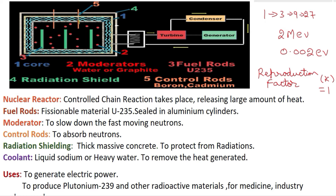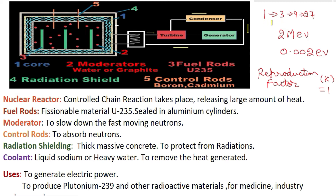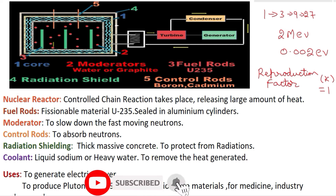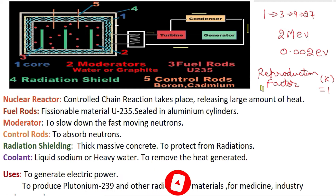To control the nuclear fission reaction, we take the help of control rods. One neutron after hitting uranium-235 gives three neutrons. If we can absorb two of those three neutrons using control rods, then one neutron after undergoing fission will give only one effective neutron. This can be done using control rods, ensuring the reproduction factor k is equal to one.